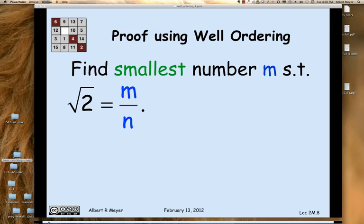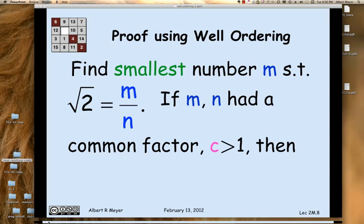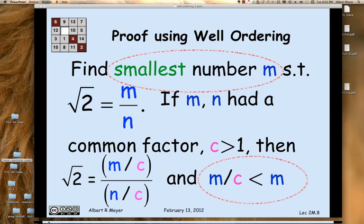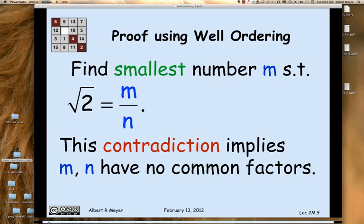I claim that that fraction, which uses the smallest possible numerator, has got to be in lowest terms. Because suppose that m and n had a common factor c that was greater than 1, a real common factor. Then you could replace m over n by m over c. The numerator is a smaller numerator that's still an integer, and n over c, the denominator is still an integer. And we have a numerator that's smaller than m contradicting the way that we chose m in the first place. And this contradiction, of course, implies that m and n have no common factors. And therefore, as claimed, m over n is in lowest terms.